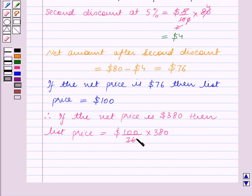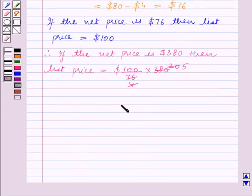Now, 19 times 4 is 76, and 5 times 100 is 500. So this is equal to $500. So the final answer is list price is equal to $500.